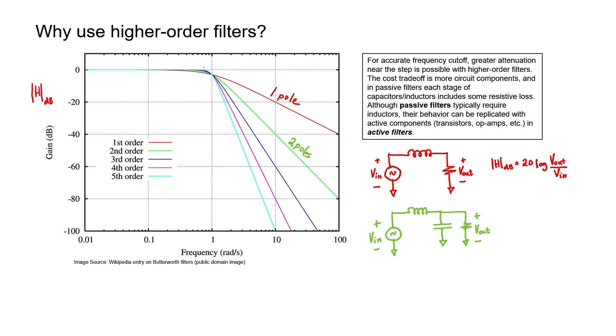No matter how you arrange your circuit elements, as long as you have two reactive elements that are not mathematically combinable, you'll get a two-pole filter. For a low-pass filter, far enough from the corner frequency, you get 40 decibels per decade roll-off — that's 20 decibels per decade per pole. The more poles we have, the more our filter's frequency response resembles an ideal filter, though this comes at the trade-off of needing more components.